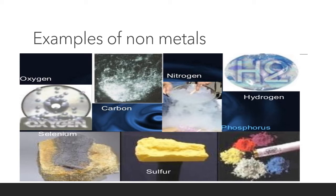Here you can see some pictures of examples of non-metals. Can you tell me some of the distinct features between metals and non-metals? Earlier I showed you that all metals are basically silver or gray in color. Here you can see that non-metals come in different colors — for example, sulfur is yellow, and iodine is bluish-violet in color, though I do not see a picture of iodine here. So non-metals can be present in various colors.